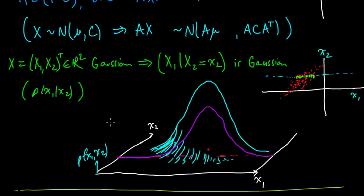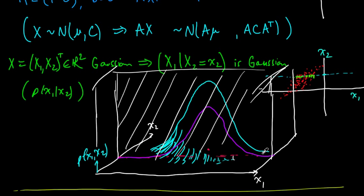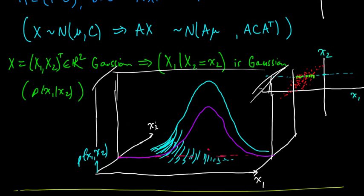We condition on that value, so that's the value we're conditioning on. Then we just look at the points on this line. We're going to look at the values that the density takes along this line. It's just this density function, but we're looking at the cut through that density that goes along from this plane right here.